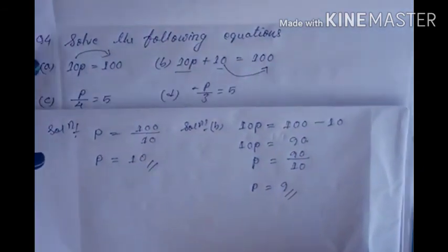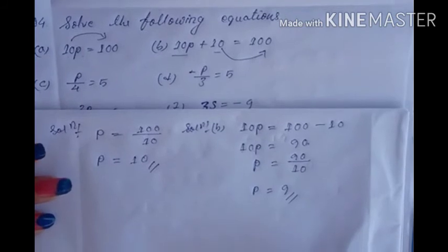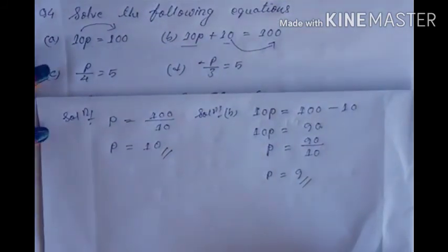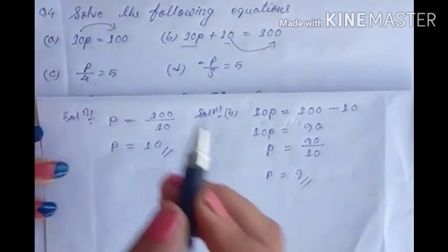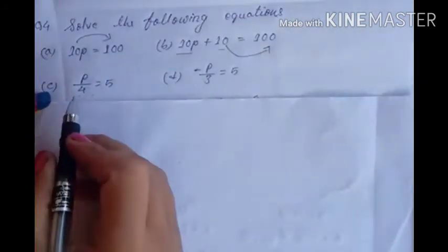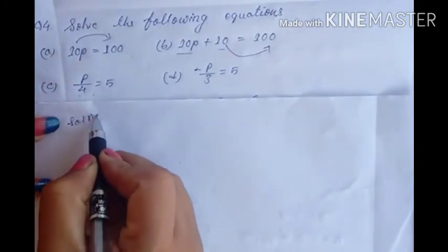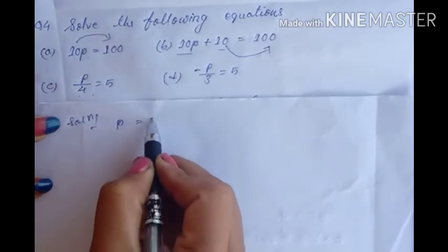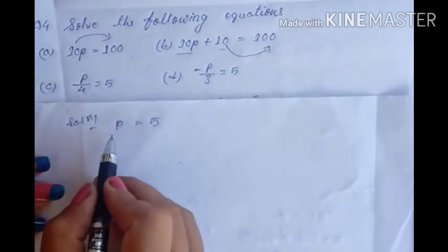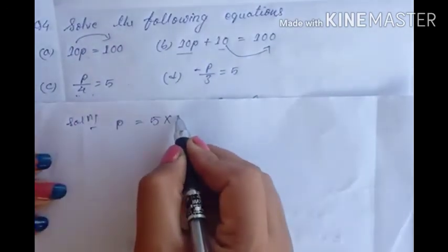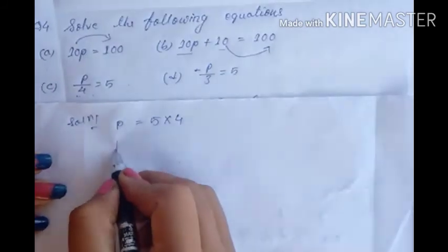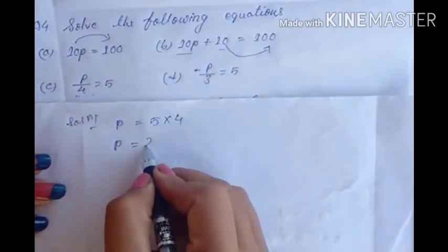For C: p upon 4 equals 5. We need the variable alone. Transpose 4 — divide becomes multiply. So p equals 5 into 4 equals 20. The value of p is 20.